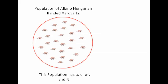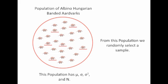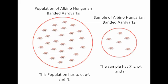What we will do is from the population we will randomly select a sample. Remember that random means that each little aardvark had an equal possibility of being selected. Random sampling is easy to talk about but very difficult to perform.